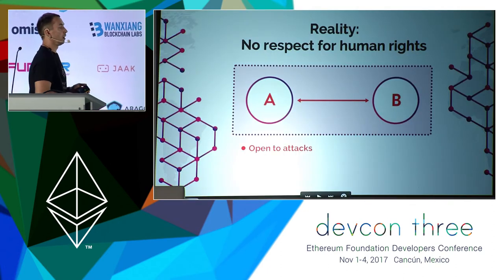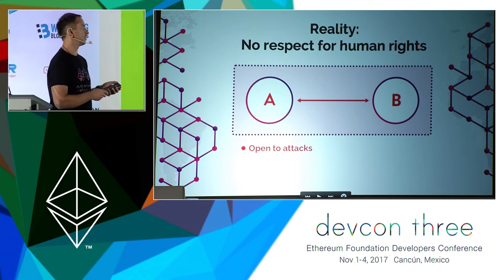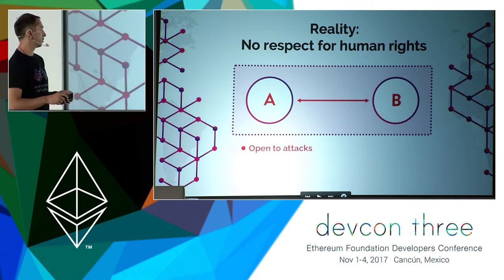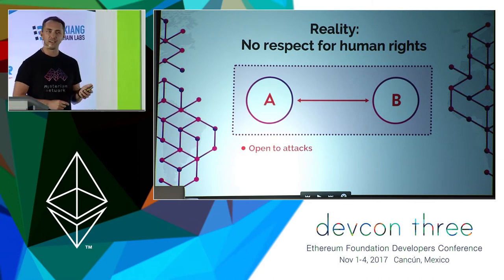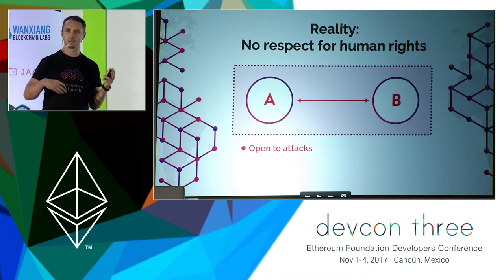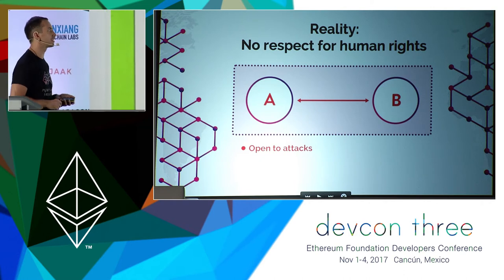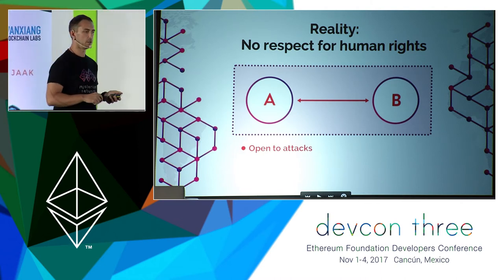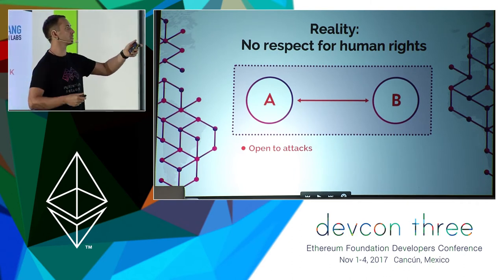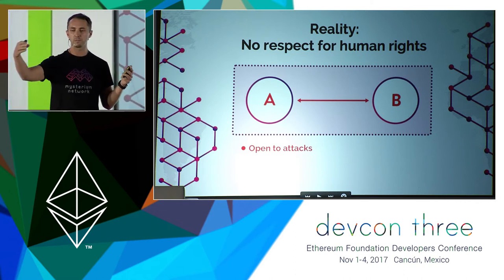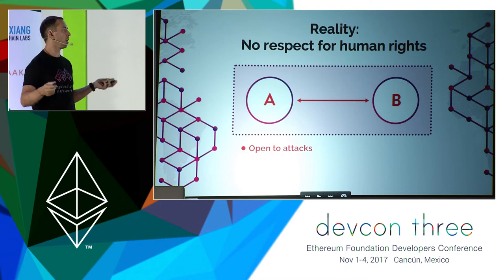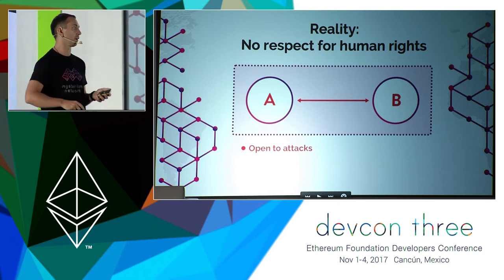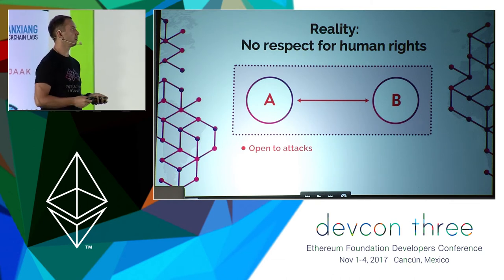On a fundamental level, anything that happens on the internet is basically communication: entity A is talking to entity B and they create a communication channel. Over the last couple of decades, this channel has been breached — to say the least. You can monitor what's happening and sometimes even interrupt the communication. Take the Facebook app to Facebook server example: in certain countries you just can't reach that server, because somebody can see that communication channel being opened up and cuts it right there.